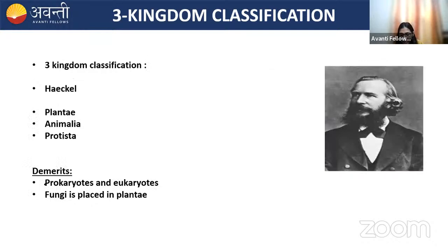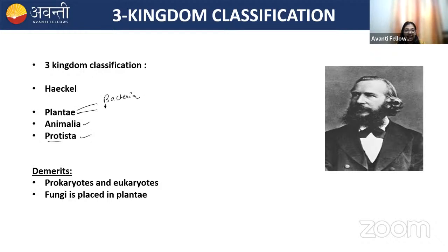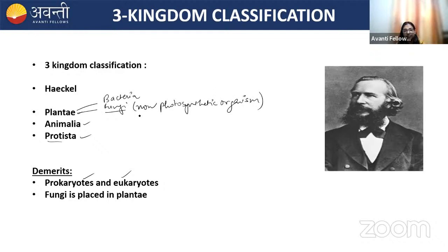Next is three-kingdom classification, proposed by Haeckel, which includes Plantae, Animalia, and the new kingdom Protista. One demerit was resolved: unicellular organisms are separated from multicellular. However, Plantae still includes bacteria and fungi. Bacteria are prokaryotes, so this classification still couldn't differentiate between prokaryotes and eukaryotes. Also, fungi — which are non-photosynthetic — were still kept in Plantae. These are the two demerits of the three-kingdom classification.